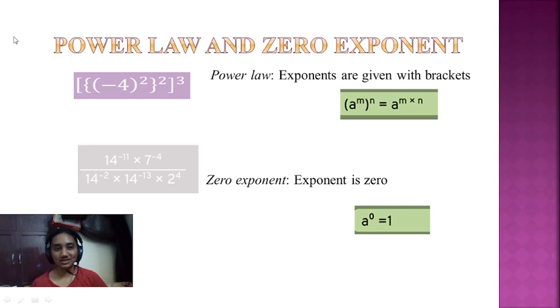In the power law, exponents are given with brackets. They're separated with brackets. In that case simply multiply the powers. In the zero exponent, anything power zero will be equal to one, so this way we apply the zero exponent formula.